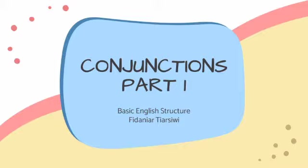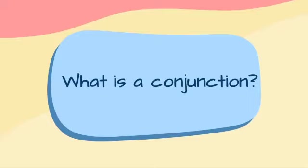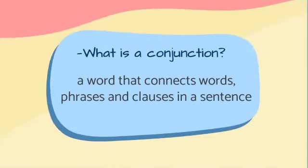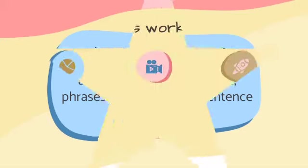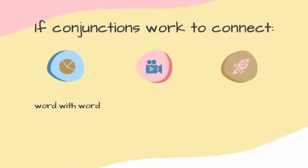First things first, let's answer: what is a conjunction? A conjunction is a word that connects words, phrases, and clauses in a sentence. As mentioned, a conjunction connects words with words, phrases with phrases, and clauses with clauses.